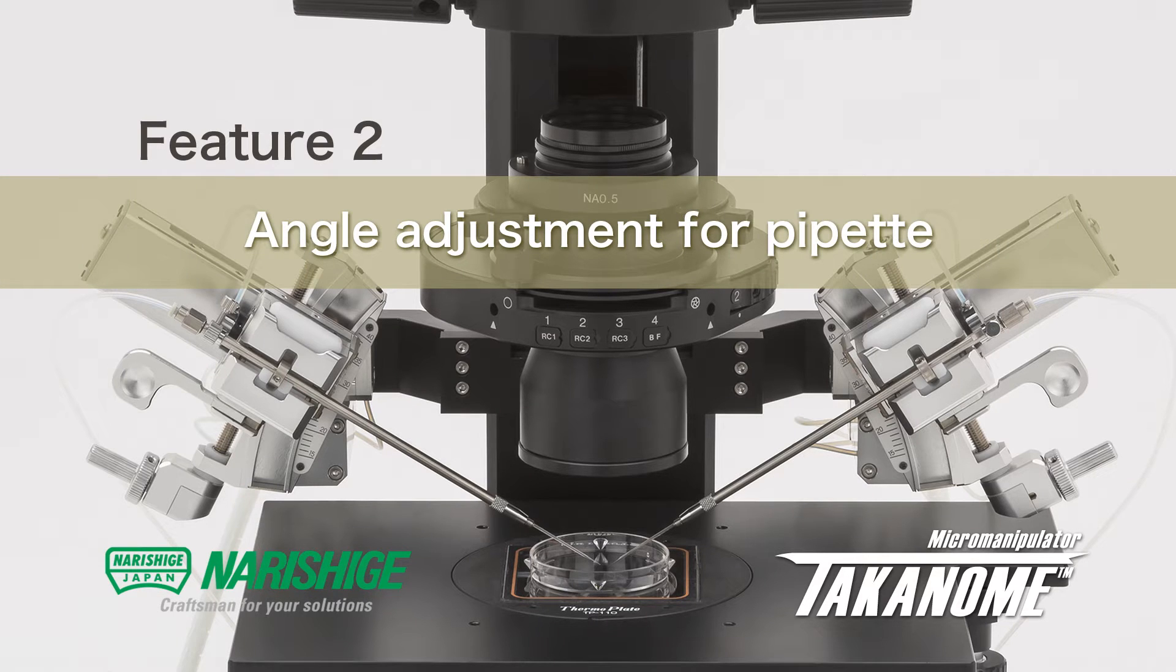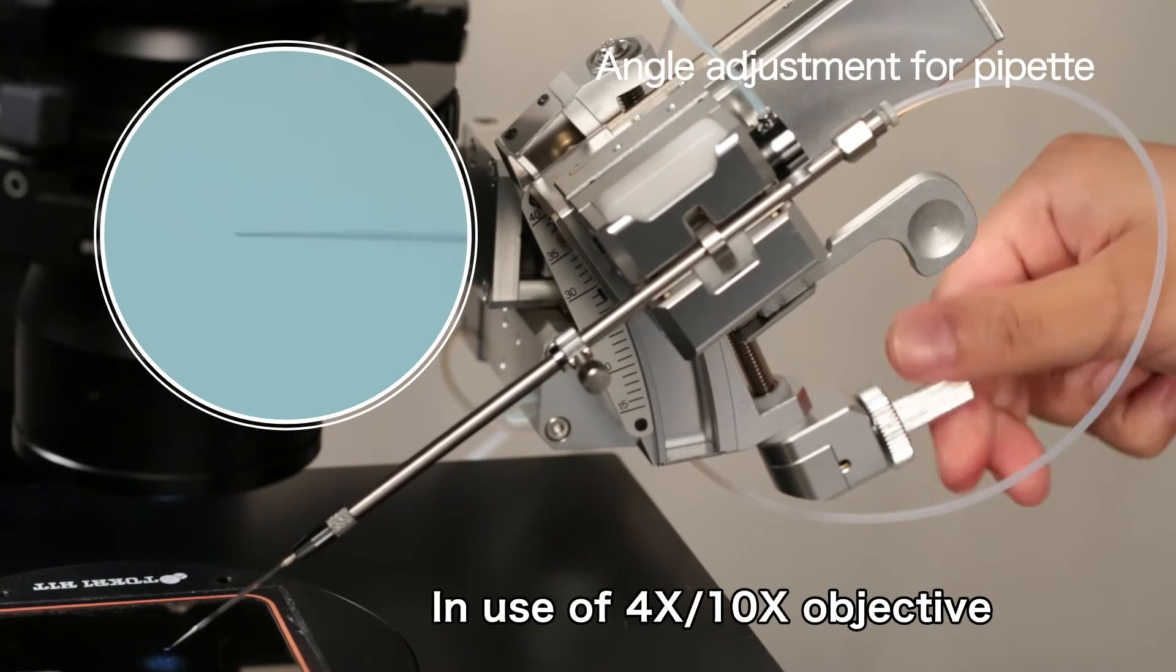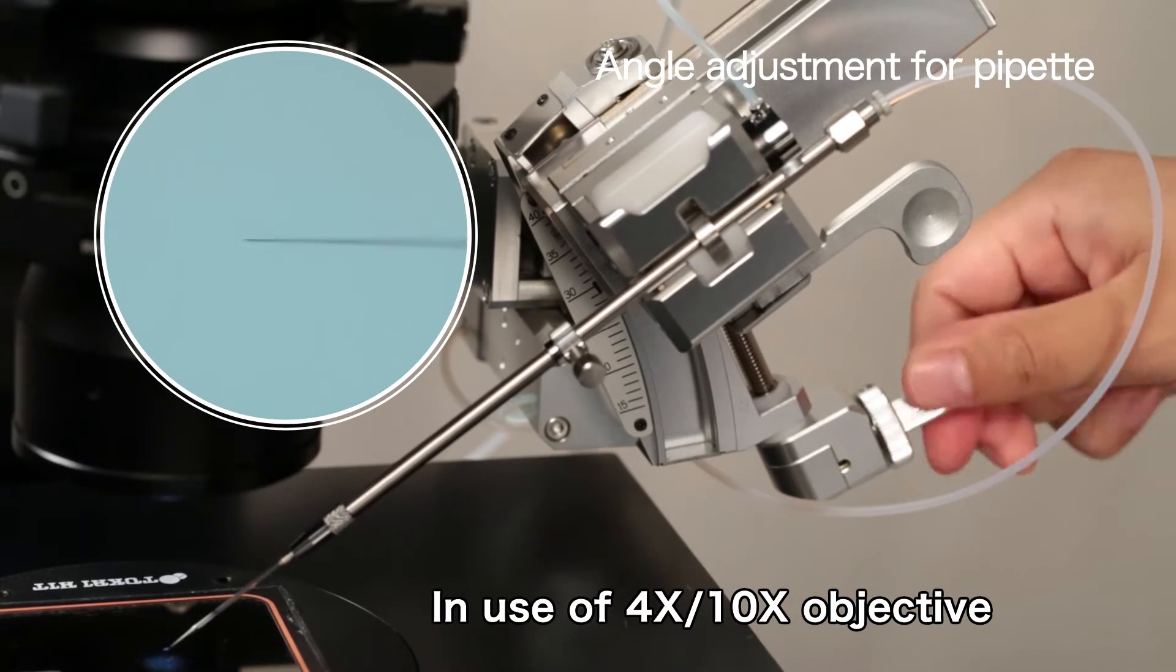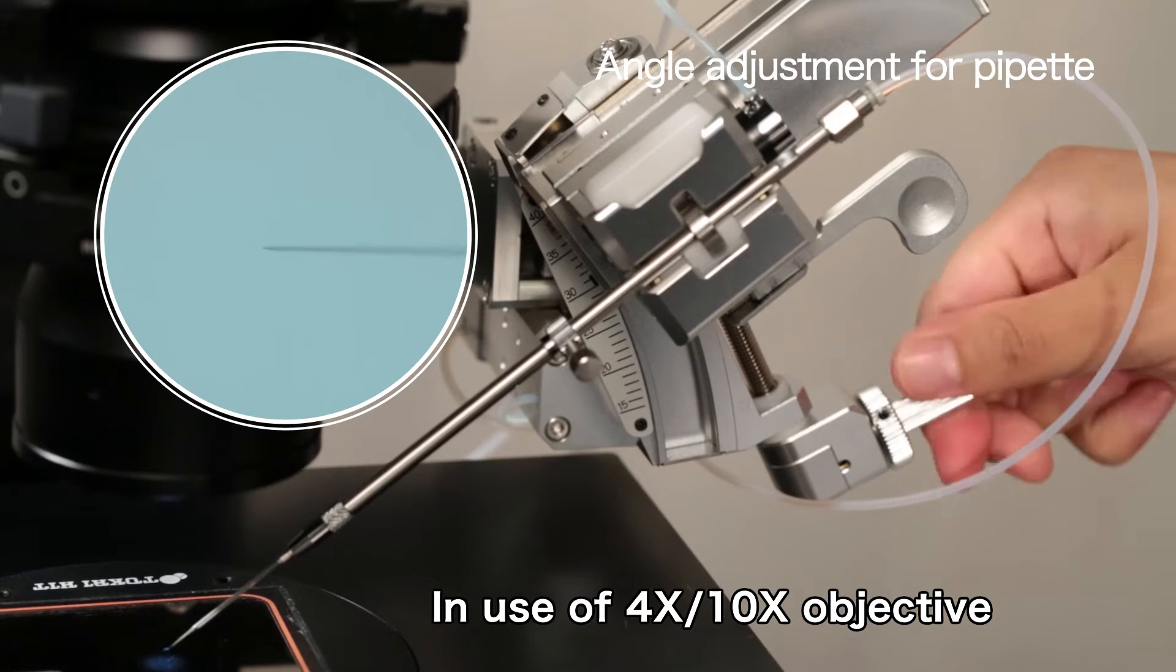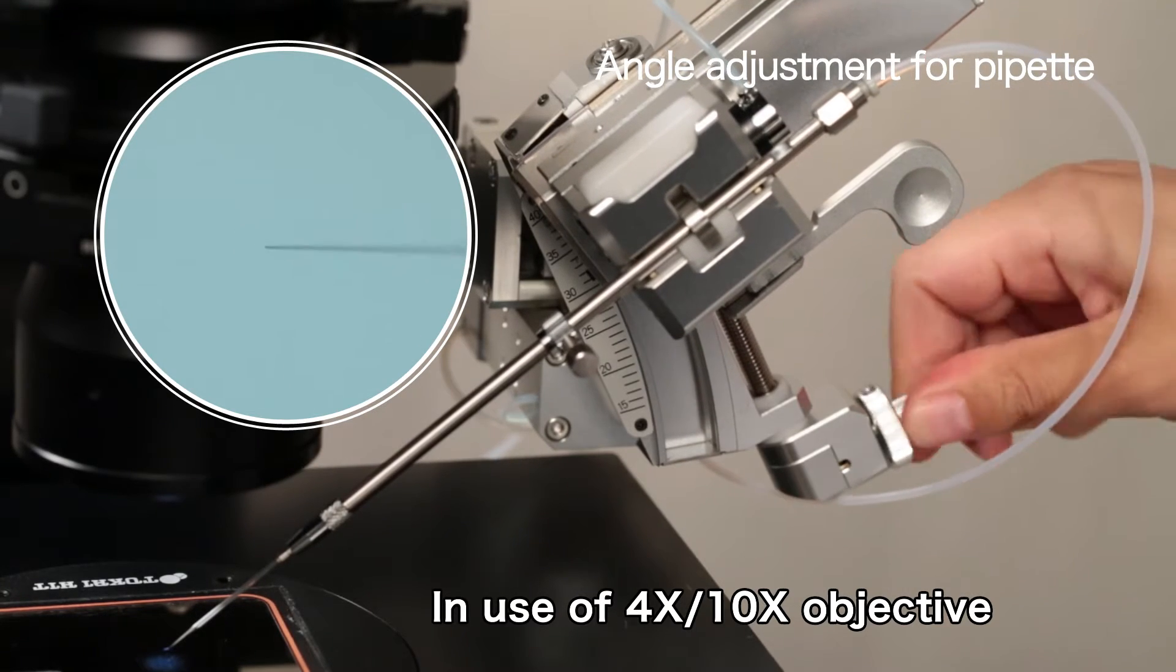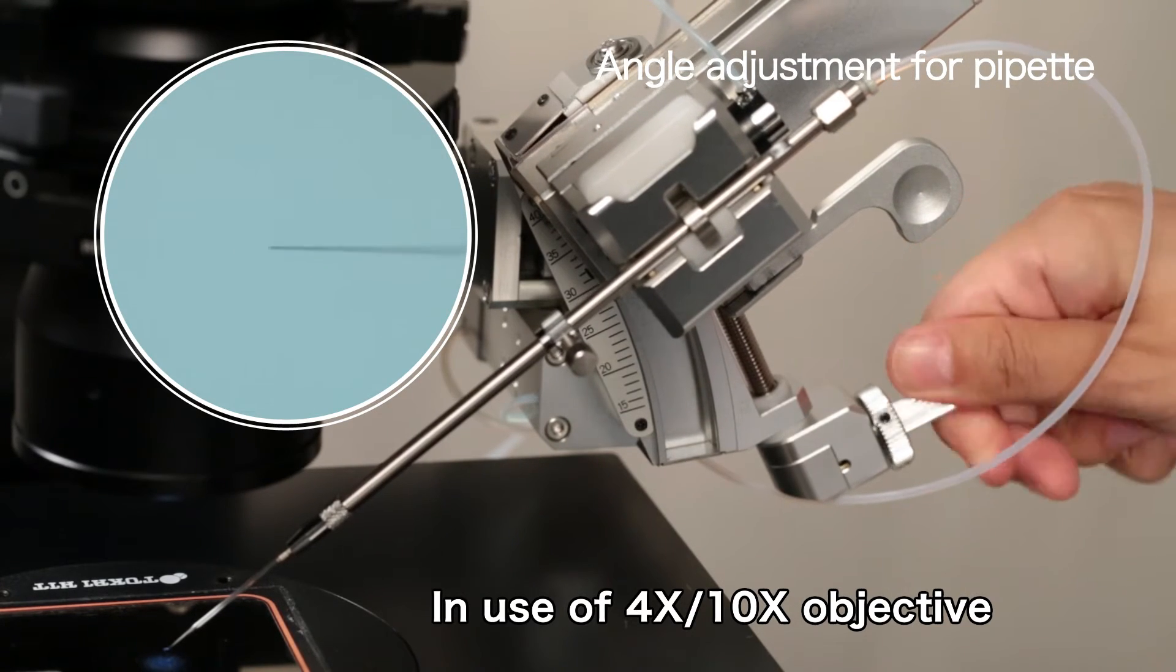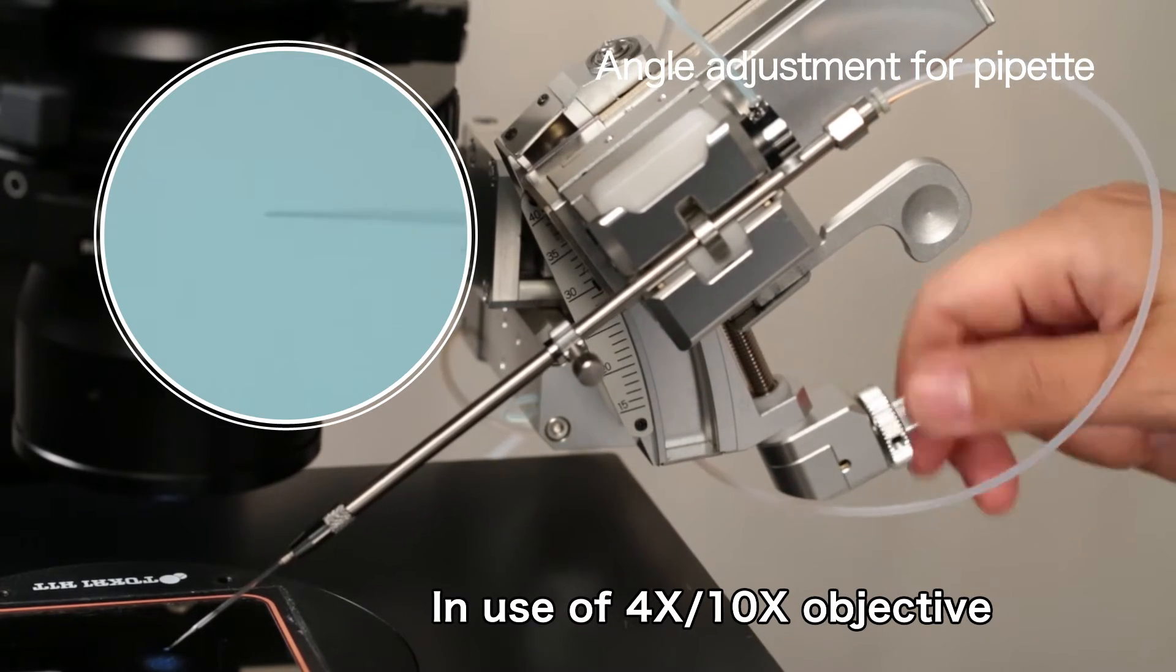Feature 2: revolutionary angle adjustment for pipette. The angle can be adjusted through a wide arc from 15 to 40 degrees. The pipette never leaves your sight, eliminating worries about broken pipettes.